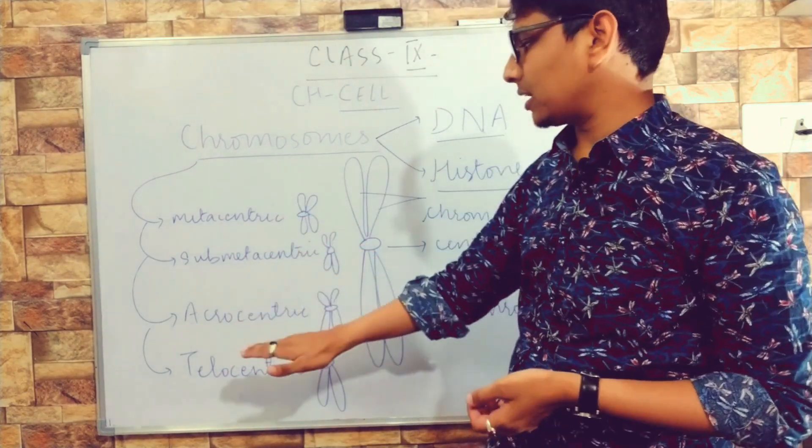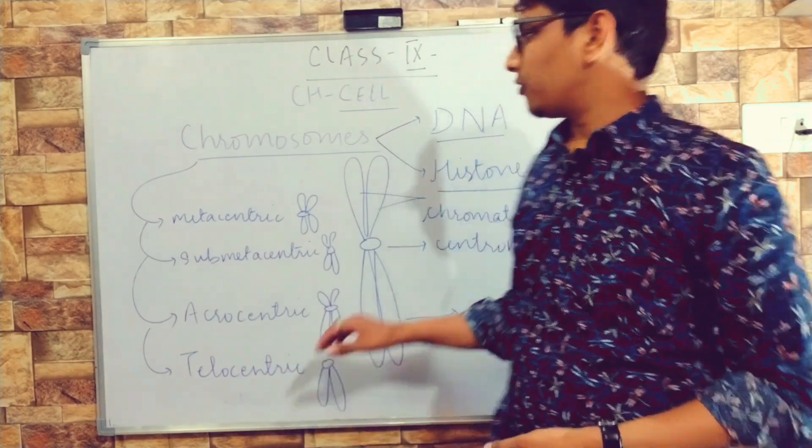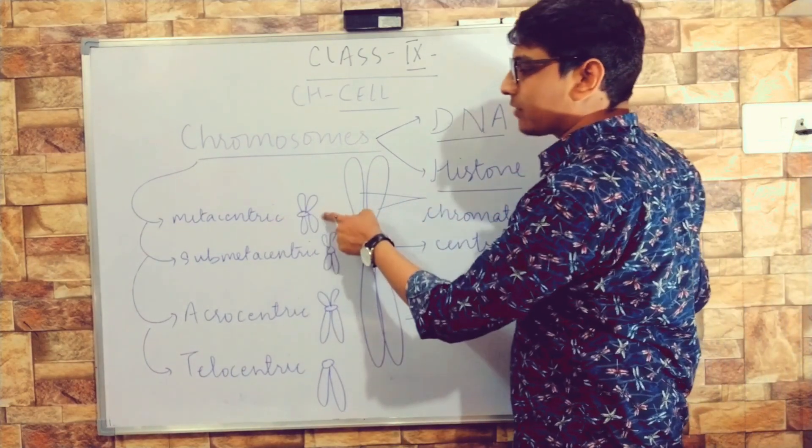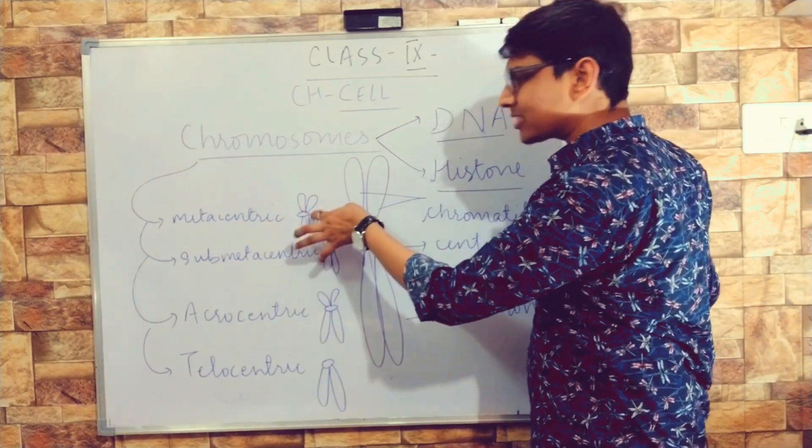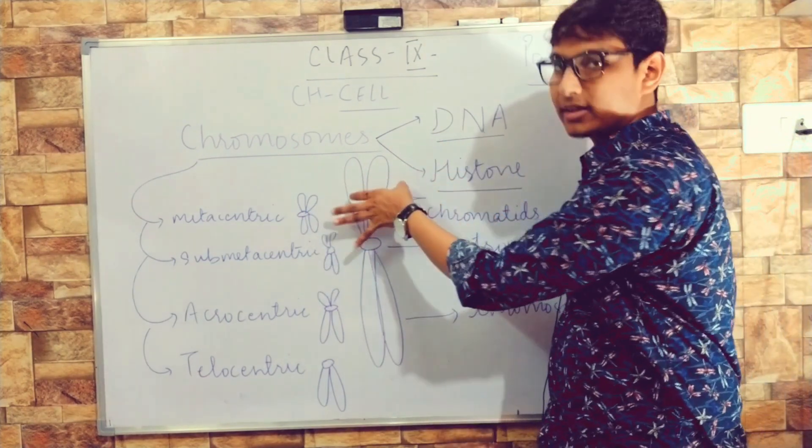Metacentric, sub-metacentric, acrocentric, and telocentric. We will start with metacentric. In metacentric, the centromere is situated in between a central pair, and the arms of the chromosome—these are called chromatids.